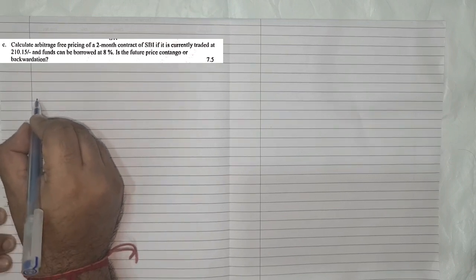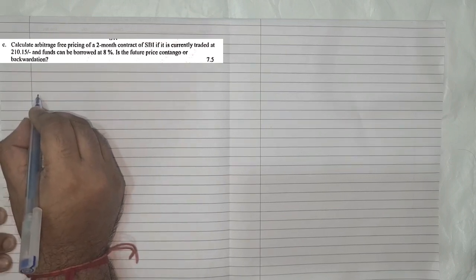The first question asks us to calculate the arbitrage free pricing of a 2-month contract of SBI if it is currently traded at 210.15 and the funds can be borrowed at 8%. It also asks: is the future price contango or backwardation? Let us figure out how we need to solve this sum — first we will note down whatever data they have provided us.